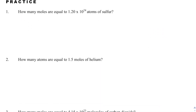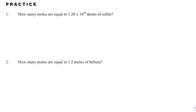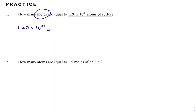When we read a problem, it's very important that we diagnose it — underline what we're given and circle what we need to find. Number 1 says: how many moles are equal to 1.20 times 10 to the 24th atoms of sulfur? I'm going to underline what I'm given: atoms of sulfur. And I'm going to circle what I'm trying to find: moles. I'm specifically given atoms of the element sulfur.